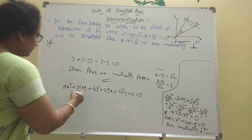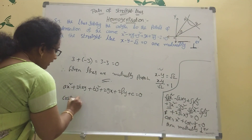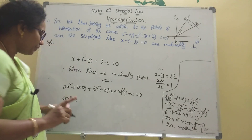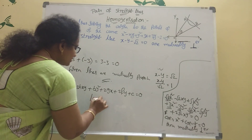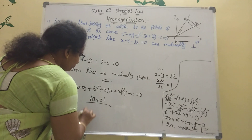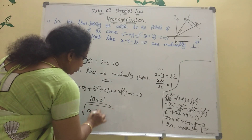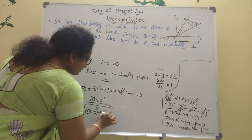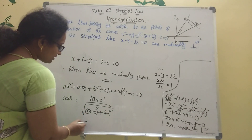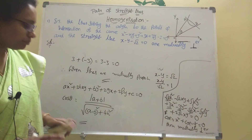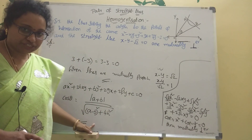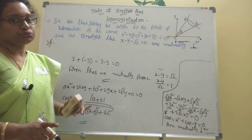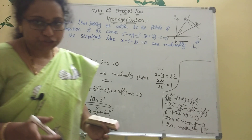The angle formula is: cos theta equal to modulus of a plus b divided by root of a minus b whole squared plus 4h squared. This is the formula. The condition for perpendicular lines is derived from this formula. Coincide as well — the formula equals 0.